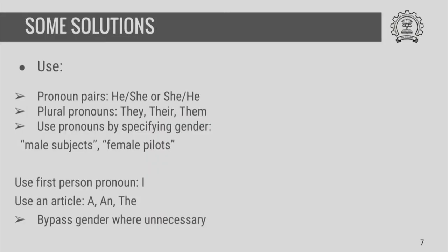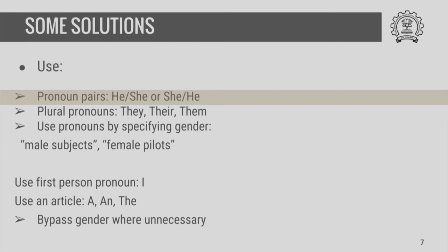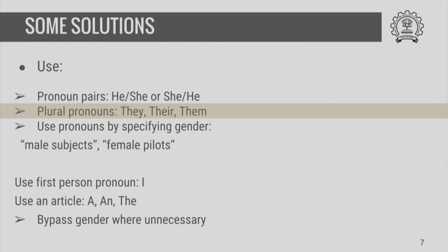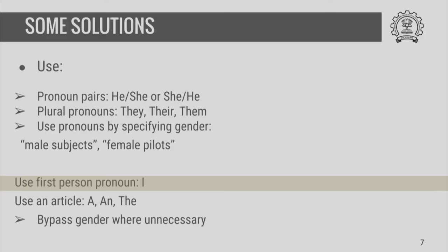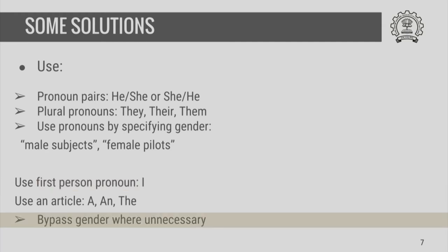A lot of solutions are available to avoid gender insensitivity and to become more gender aware, neutral, and sensitive. One can use pronoun pairs as shown in some examples earlier. One could use plural pronouns to refer to all human beings, such as they, their, them, and so on. Or if one wants to be gender aware, one could use pronouns by specifying the gender, such as male subjects or female pilots. Alternatives could be to use first person pronouns — that is, instead of referring to the gender when you yourself are communicating, you could refer to yourself as I.